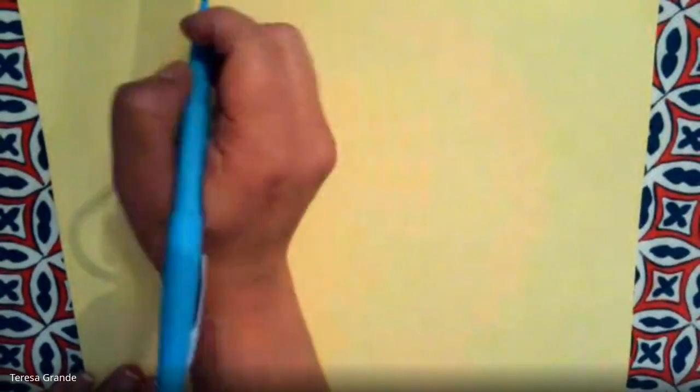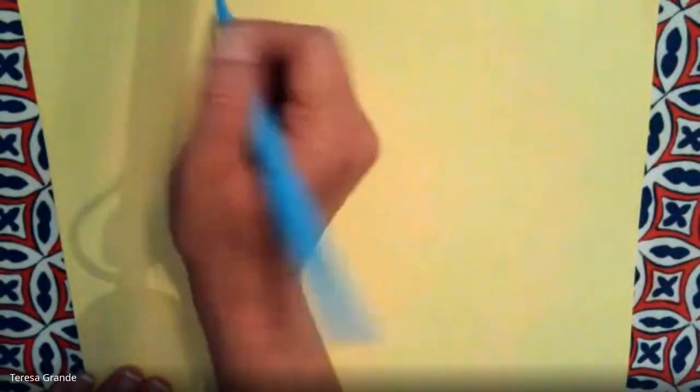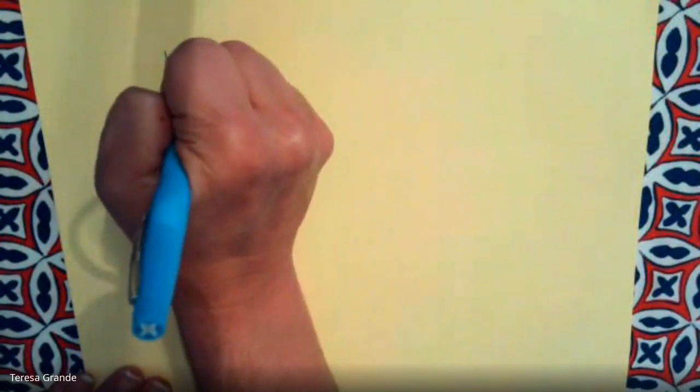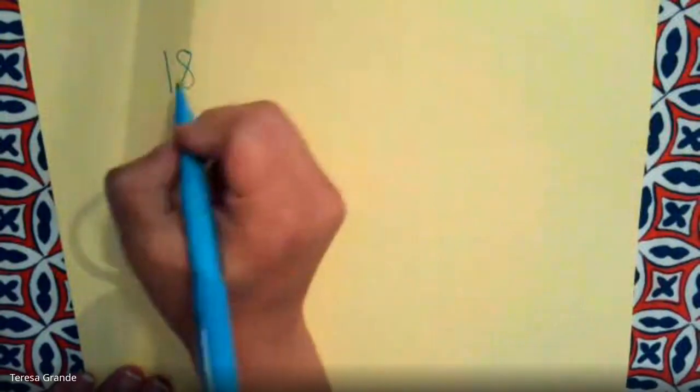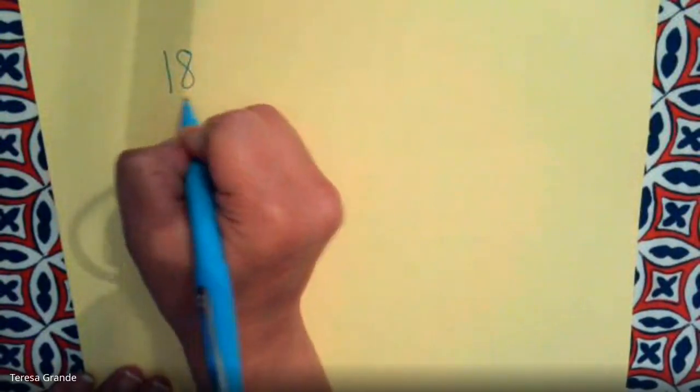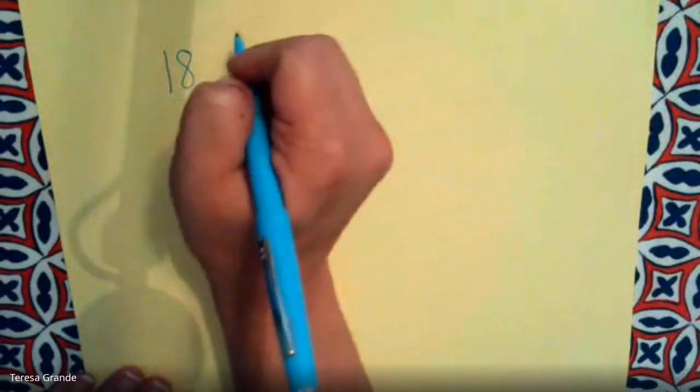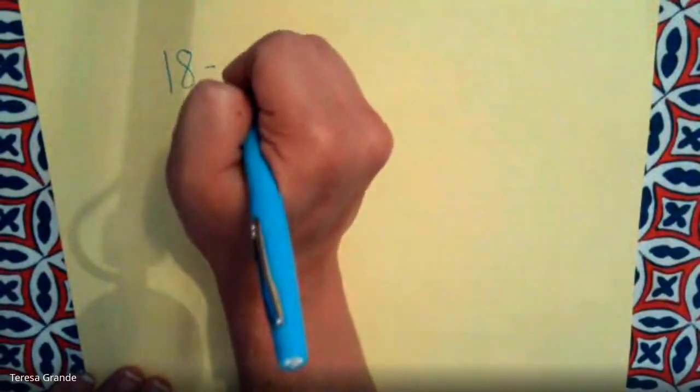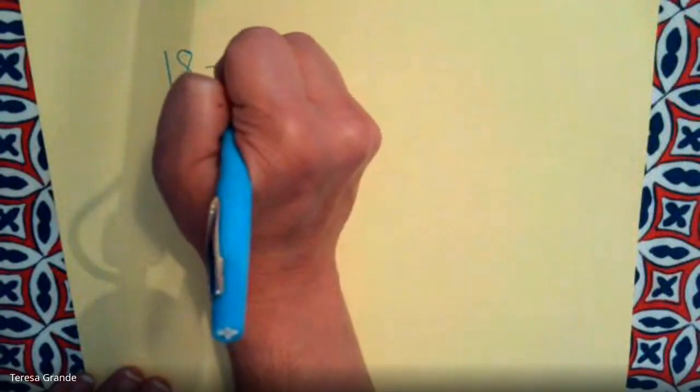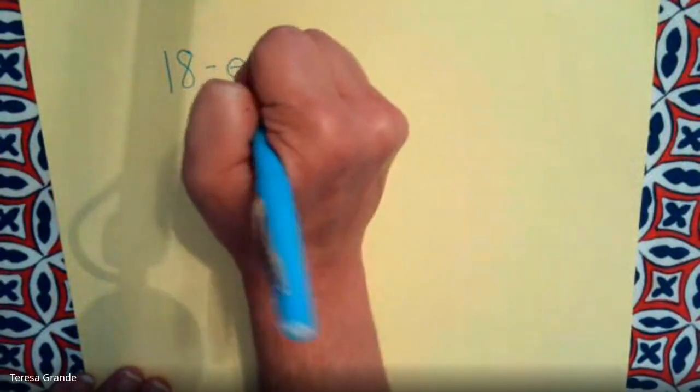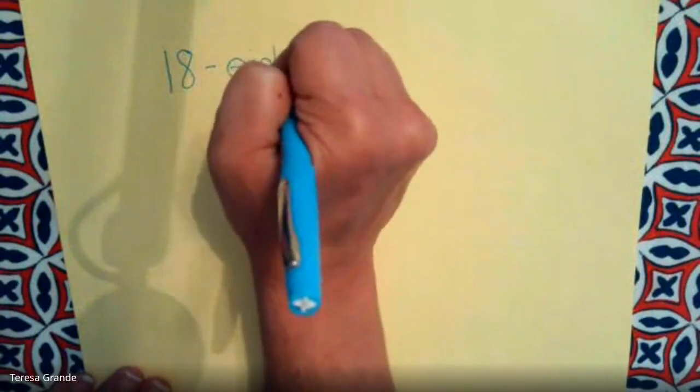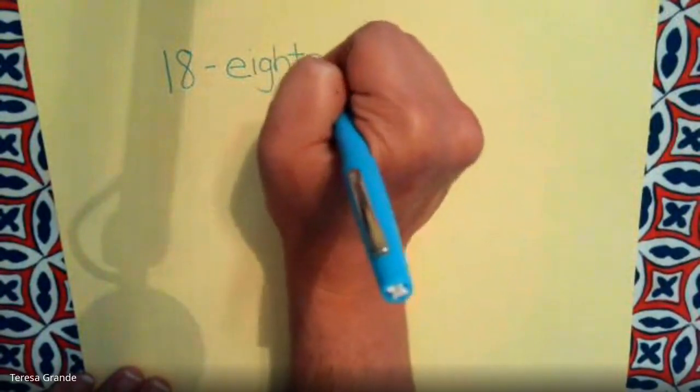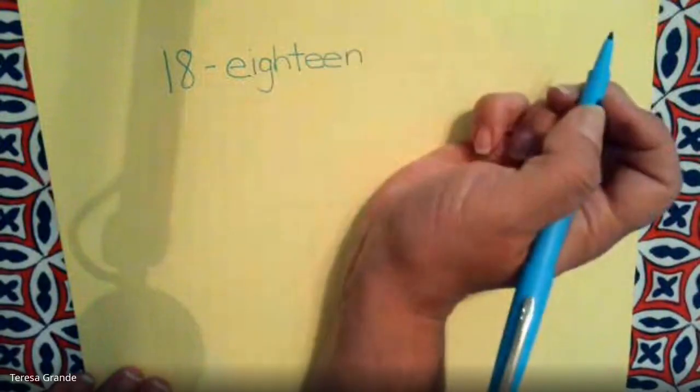So let's start with the number 18. The number 18 is a 1 and an 8. There is a 1 in the 1's place and an 8 in the 1's place. If we're going to write the word for number 18, e-i-g-h-t-e-e-n, 18.